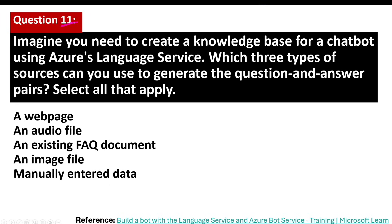Question number 11. Imagine you need to create a knowledge base for a chatbot using Azure Language Service. Which three types of sources can you use to generate the question and answer pairs? Select all that apply. I'm looking for three correct answers from the available options.